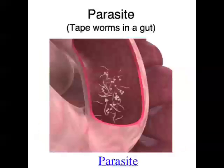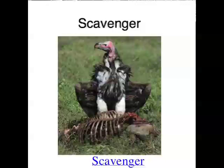Another type of consumer is a parasite. Parasites live on or in and feed on another organism, and this causes harm to the other organism. A good example of a parasite is head lice, which feeds on you and lives in your hair. Another type of consumer is a scavenger — scavengers are consumers that eat dead animals. A good example of a scavenger is a vulture.